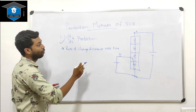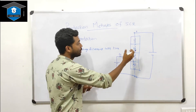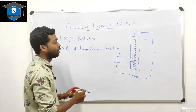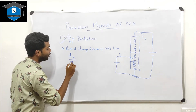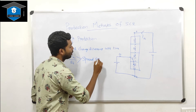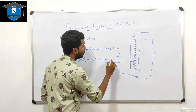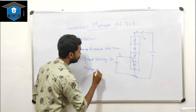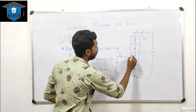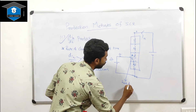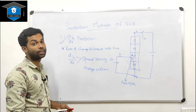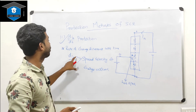If the charge carriers are fully spreading around the SCR, it is fully turned on, and anode current conducts from anode to cathode terminal. If the rate of change of anode current di/dt is greater than the spread velocity of charge carriers, there is a hot spot formation near the gate terminal, which may cause heating of the SCR.